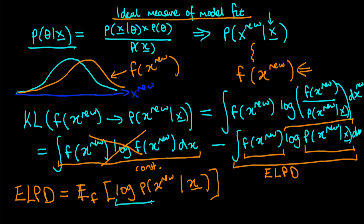And because this term inside the bracket is just the log predictive density or the log posterior predictive density for its full name, and because we're taking the expectation of it with respect to F, this is what we call the expected log predictive density. And it's the ideal measure of a given model's fit to data.